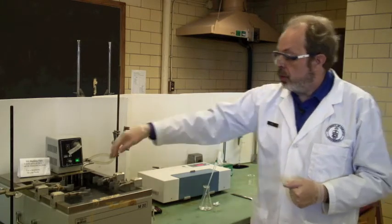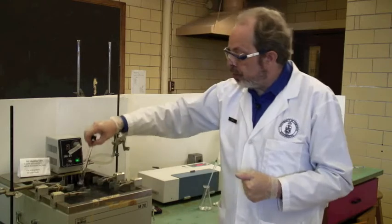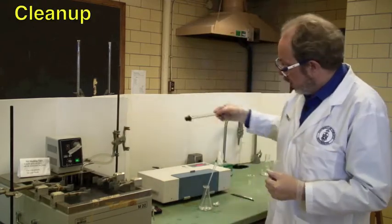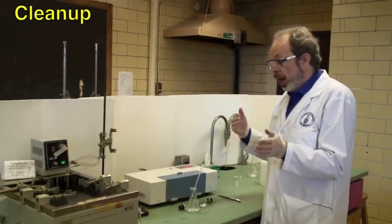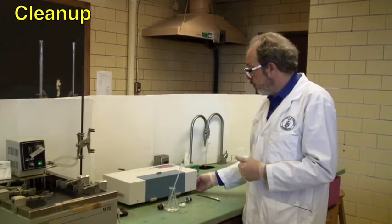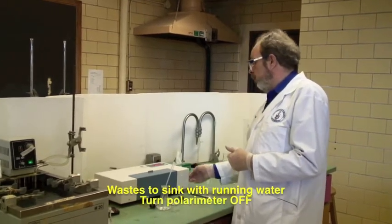When you have finished, all you need to do is take everything out. It's just sugar and mild acid solutions. Everything gets poured down the sink and turn off the polarimeter.